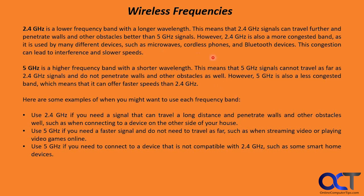A good way to think about it: if your devices are farther away from your router or hotspot, use 2.4 gigahertz to ensure a good connection. But if you're right next to your router, use 5 gigahertz for a faster connection. Use 2.4 gigahertz when you need a signal to travel a long distance and penetrate walls — such as connecting to a device on the other side of your house. Use 5 gigahertz when you need faster speeds over shorter distances, such as streaming video or playing online games, or when connecting a device that is not compatible with 2.4 gigahertz, such as some smart home devices.